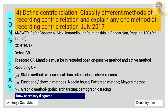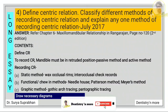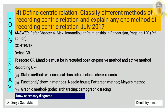Next question: define centric relation, classify different methods of recording centric relation, and explain any one method. Refer chapter 6, maxillomandibular relationship, page number 122. First define what is CR — always write the GPT definition when a definition is asked. To record CR, the mandible must be in a retruded position. Write about both the passive methods (seven methods given) and the active methods (three methods given).